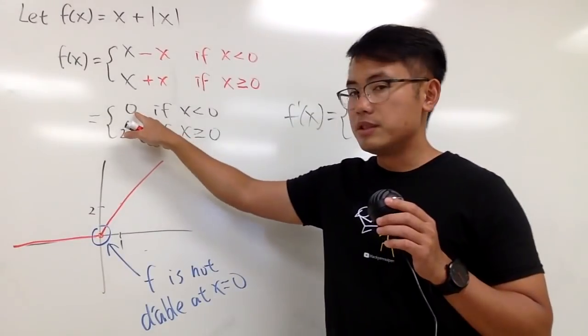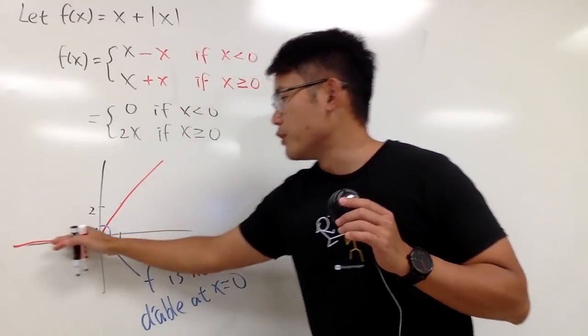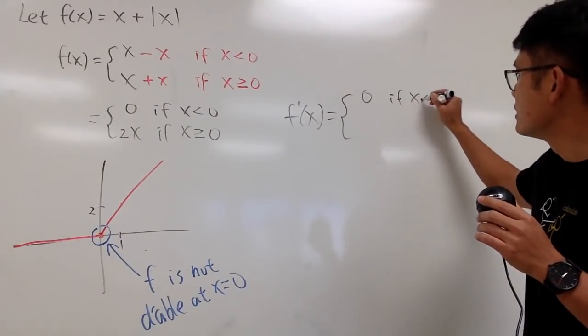Well, the derivative of 0, you see this right here, it's just a horizontal line. So, we know the derivative right here is just 0. So, that's when x is less than 0.